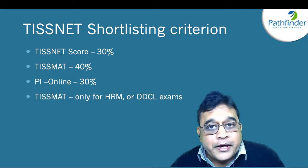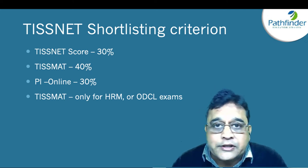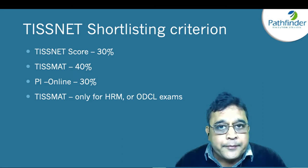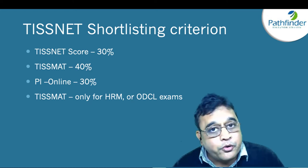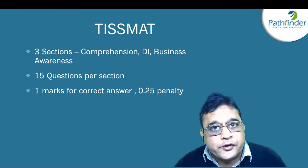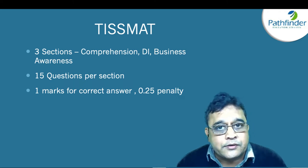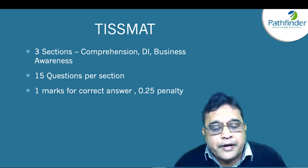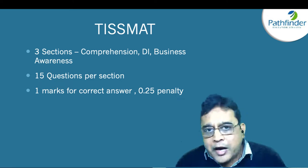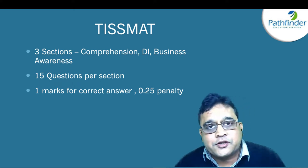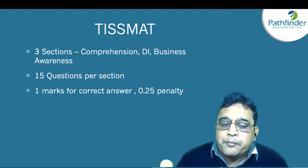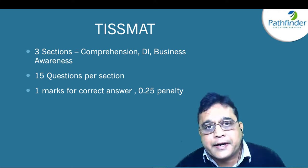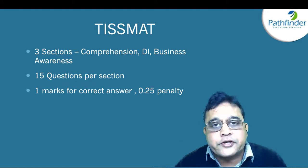Admissions to Tata Institute of Social Sciences are based on your TISnet score, your TISMAT score, and your score in the online personal interview. TISMAT — the Tata Institute of Social Sciences Management Aptitude Test — is required only if you are applying for the HR or the ODCL course. It has three sections: reading comprehension, data interpretation, and business awareness, with 15 questions per section, one mark for correct answers and 0.25 negative marks for wrong answers.